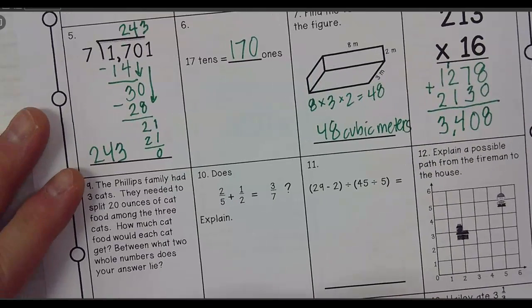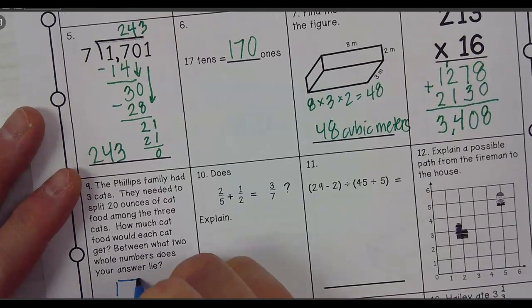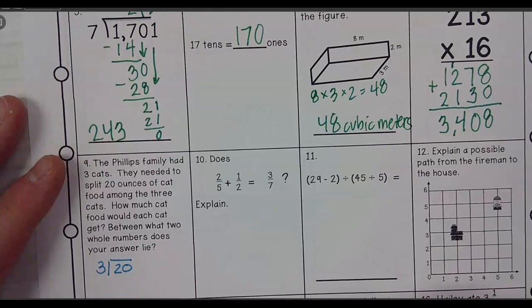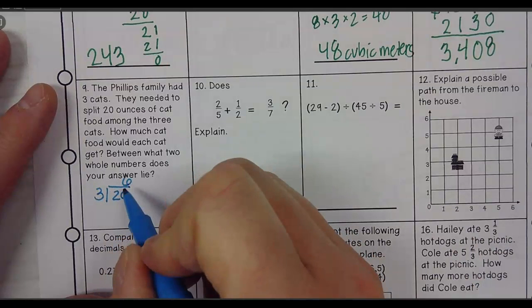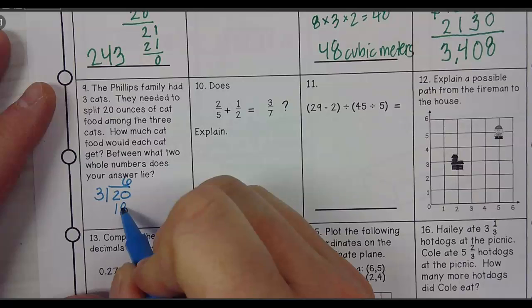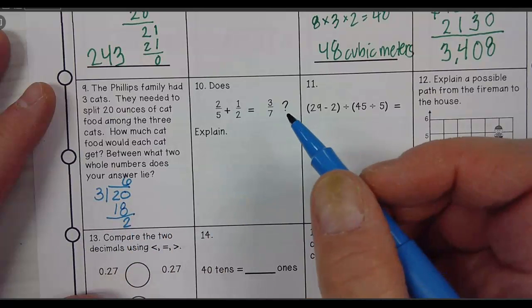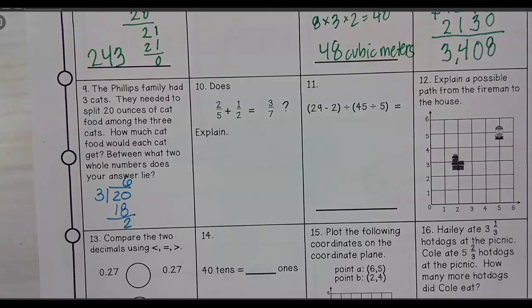I heard 20 divided by 3, yep. And how many times will 3 go into 20? 6 times 3 is? 20 minus 18 is? So my answer is? 6 and 2 thirds.